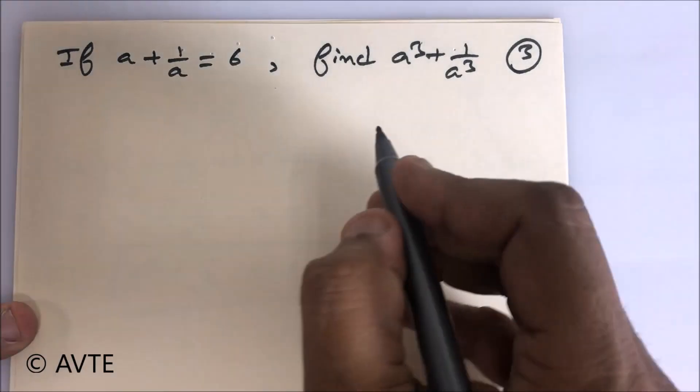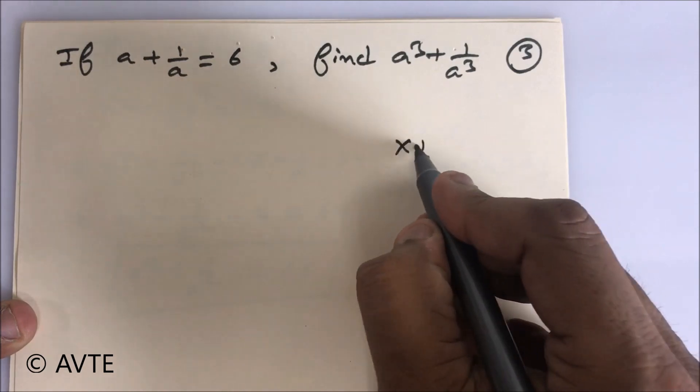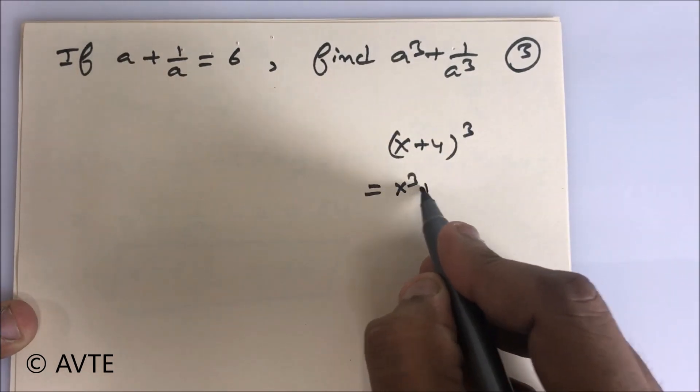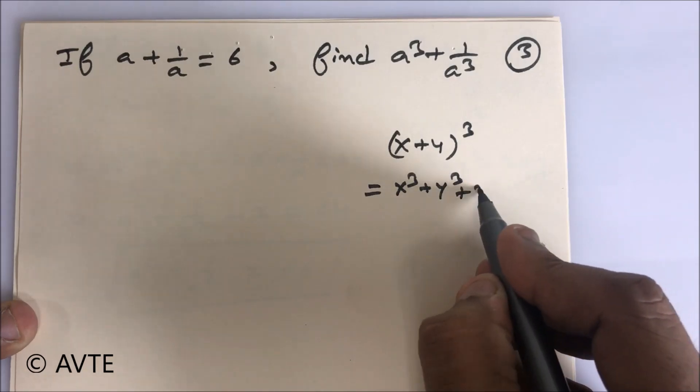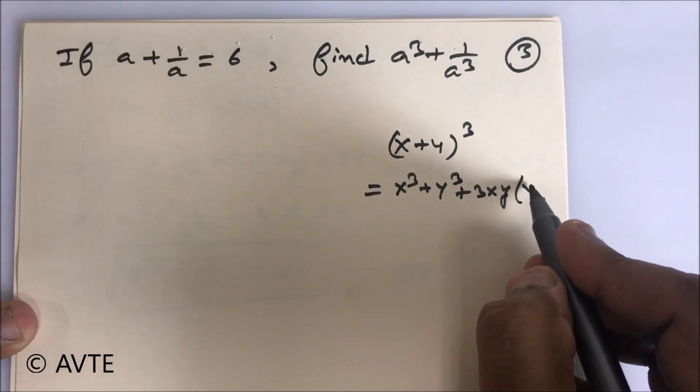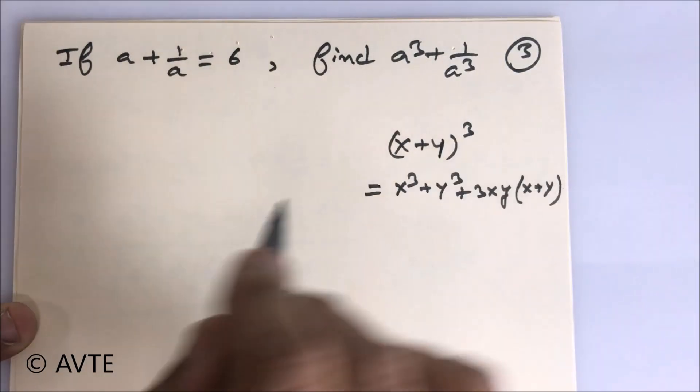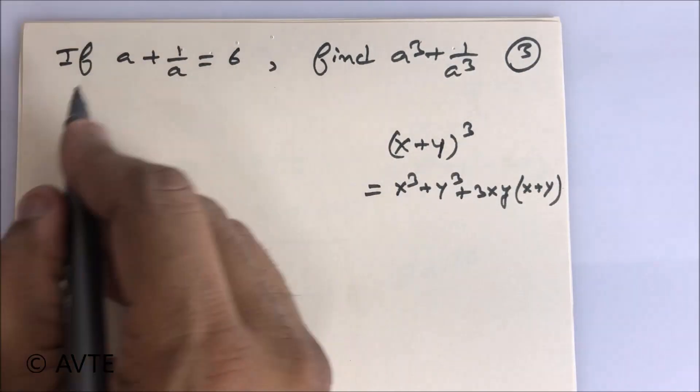So here you go. We have seen the formula of (a+b)³, that is a³ plus b³ plus 3ab(a+b). So we have to apply the same logic here. We have to do the cube.